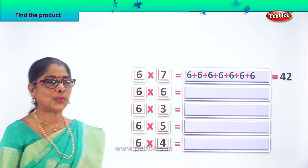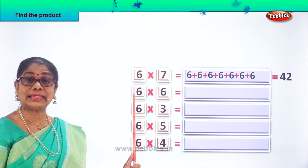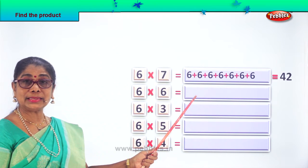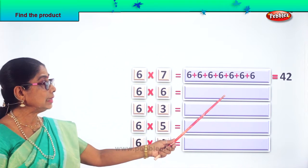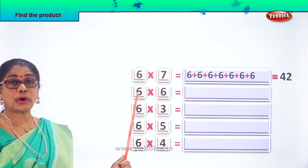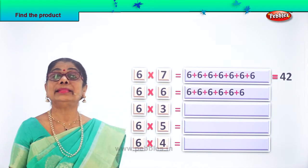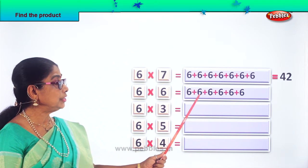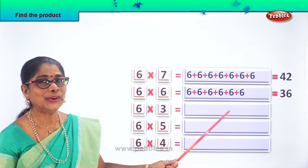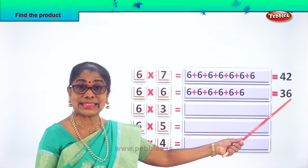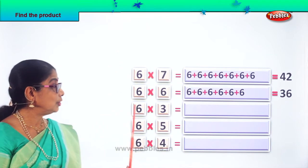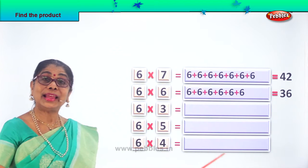Very good. Let's look at the next one — the product of 6 into 6. Now we write 6, six times: 6 plus 6 plus 6 plus 6 plus 6 plus 6 — that's 6 six times. Try to find the product of 6 into 6 using repeated addition. Write 1, 2, 3, 4, 5, 6. What is 6 sixes? 6 sixes are 36. Finding the product of 6 into 6 using repeated addition.